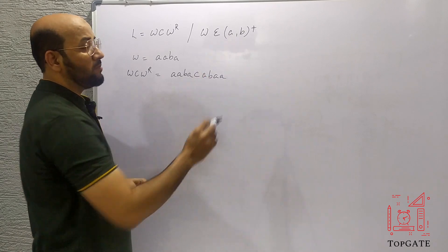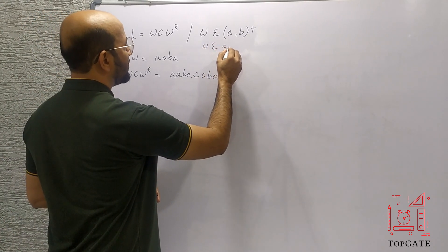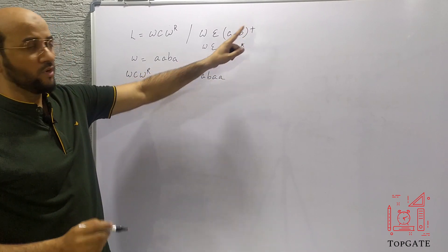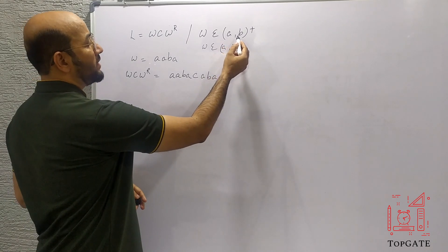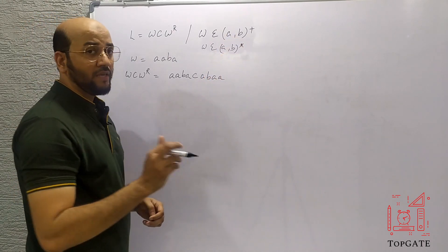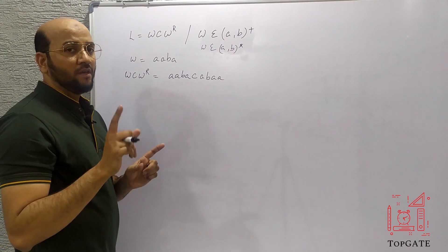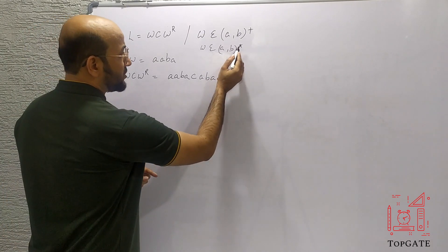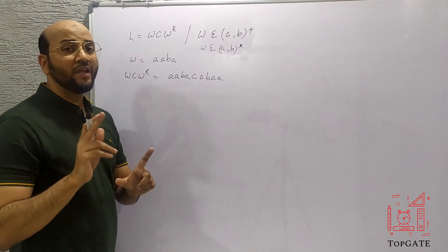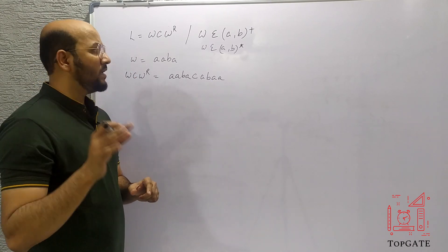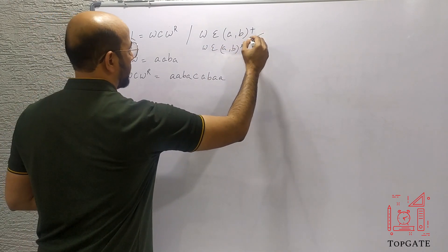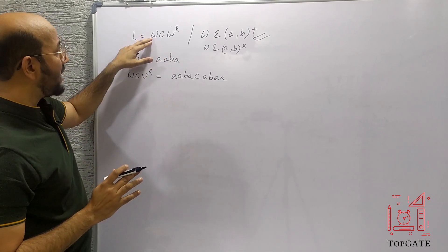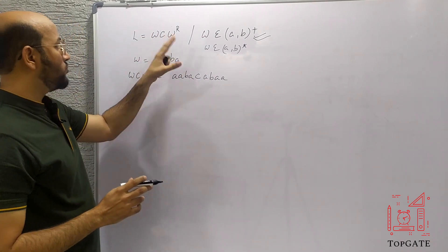We have W belonging to {A,B}+. Compare this with W belonging to {A,B}* — the Kleene star. The difference is: with + (positive closure) there is no null, so at least one symbol must be present — either A, B, or a combination. With * (Kleene closure) we can have anything including null. We are doing the question for the positive closure case, so something must always be present before C and after C.